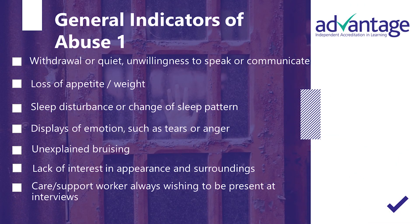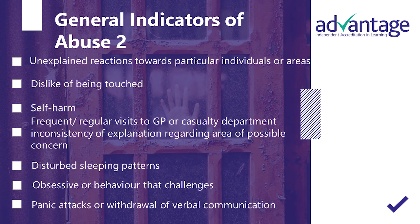Indicators of abuse can include being withdrawn or quiet, an unwillingness to speak or communicate, a loss of appetite or weight, sleep disturbances or changes in sleep pattern, displays of emotions such as tears or anger, unexplained bruising, a lack of interest in appearance and surroundings, a care worker always wishing to be present at interviews, unexplained reactions towards particular individuals or areas, a dislike of being touched, self-harm, frequent visits to the GP or casualty department, inconsistency of explanation regarding areas of concern, disturbed sleeping patterns, obsessive or challenging behaviour, panic attacks or withdrawal of verbal communication.